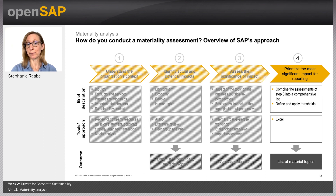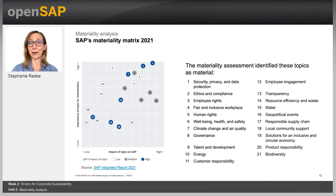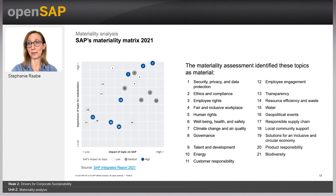In a fourth step, we combined the previous two assessments and applied thresholds because the list was still too long to cover all topics in our reporting. The result in 2021 looked like what is shown here, but as I record this session, the latest results for our 2022 analysis are not yet available. I invite you to read the SAP Integrated Report 2022 and see the results of our latest materiality analysis there. With that, I'd like to thank you for your attention and say goodbye.